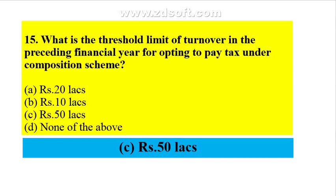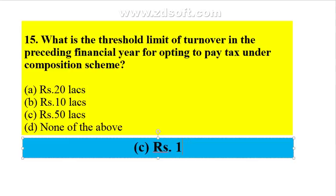What is the threshold limit of turnover in the preceding financial year for opting to pay tax under composition scheme? This is not 50 lakhs — it has been amended. The maximum limit is now rupees 1 crore. To opt for composition scheme, the aggregate annual turnover should be less than rupees 1 crore, amended from the earlier 50 lakhs or 75 lakhs.